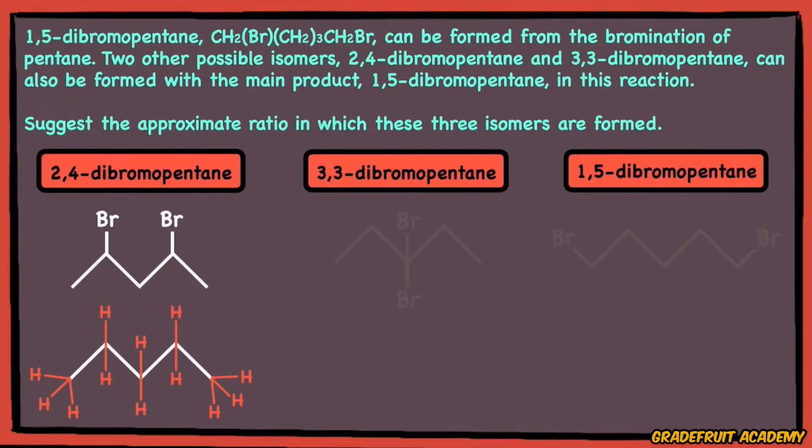For 2,4-dibromopentane, in order for the two bromine atoms to be attached to the 2nd and 4th carbon atoms only, the bromine atoms have 4 out of 12 hydrogen atoms to choose from. Hence, the probability of this isomer being formed is 4 out of 12.